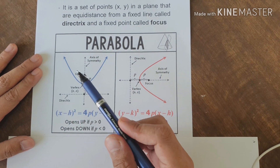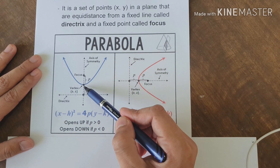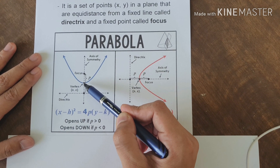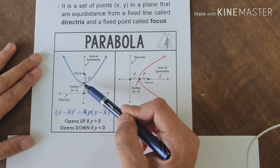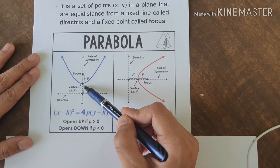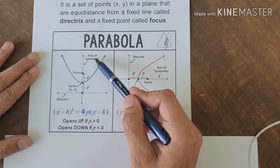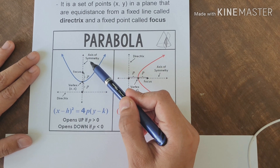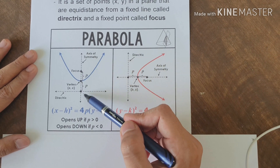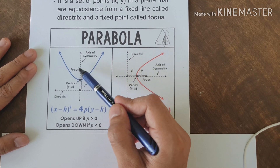Always remember: if our parabola opens upward, the vertex is the minimum point. If the parabola opens downward, the vertex is the maximum point. The axis of symmetry cuts a parabola into two congruent parts to have a mirror image.